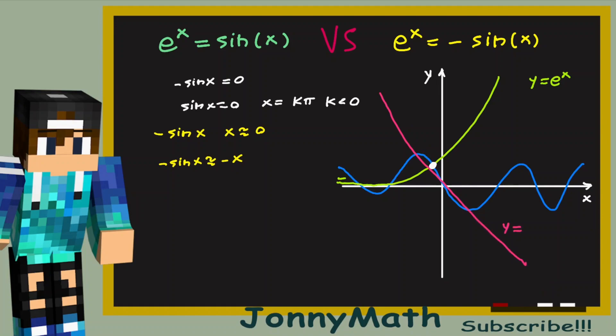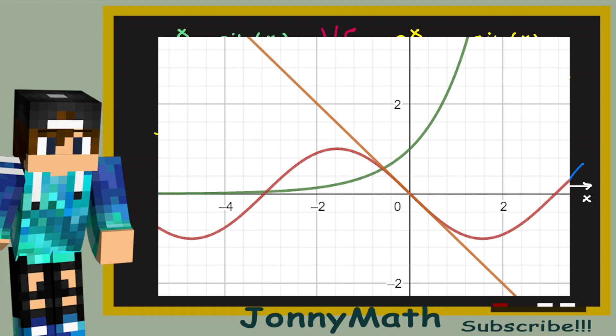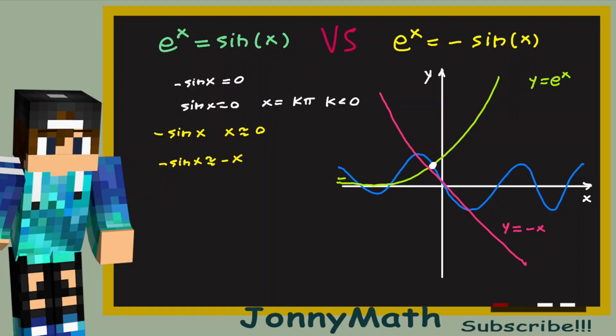This is y equals minus x. And I'll show you how this graph looks on a graphic calculator. As you can see now, these points are very very close. And we could say that e to the x equals sine of x at that point, when e to the x equals minus x. This is a very good approximation of our function minus sine of x.